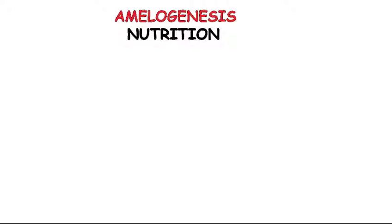Hello everyone. In this video I am going to tell you about the source of nutrition for the enamel forming cells, i.e. the ameloblasts or the inner enamel epithelial cells before they are differentiated. The source of nutrition can be divided into three main sources.